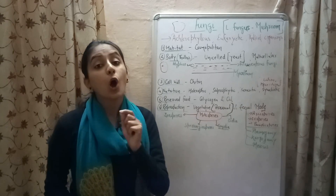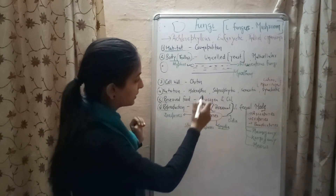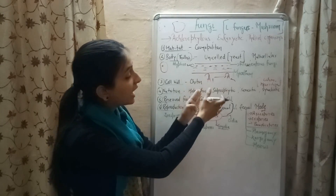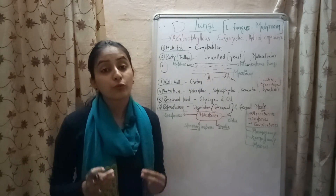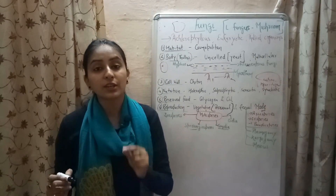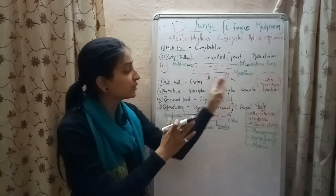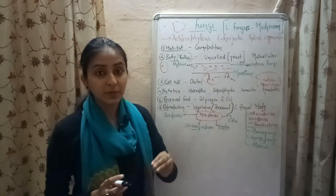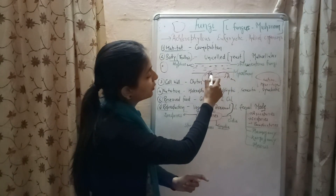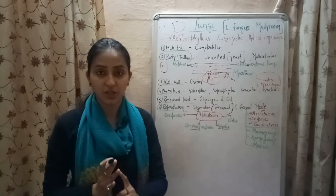कुछ fungi होते हैं जो कि saprophytic होते हैं, that is feeding on dead and decaying matter. कुछ होते हैं जो parasitic होते हैं, और कुछ fungi होते हैं जो कि symbiotic relationship show करते हैं. Symbiotic relationship एक ऐसी interaction होती है जिसमें दो organisms एक दूसरे के साथ ऐसे interact करते हैं कि दोनों को benefit हो. तो fungi जब symbiotic relationship show करता है algae के साथ, तो उस time fungi को बोलते हैं lichen. So, lichen is the symbiotic relationship between algae and fungi. Fungi algae को nutrients provide कराता है, और algae in return fungi को food provide कराते हैं.